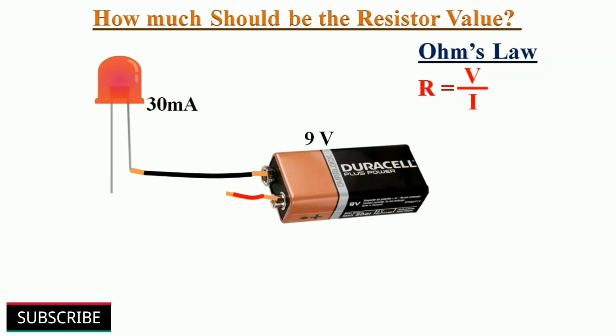Yes, we can calculate this with the help of Ohm's law. According to Ohm's law, resistance equals voltage divided by current, that is 9V divided by 30mA, that comes to 300 ohms. Here we have to use 300 ohm resistor to light up this LED. This is how we can calculate resistance for any given circuit.